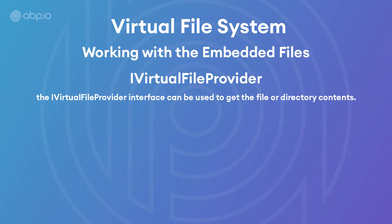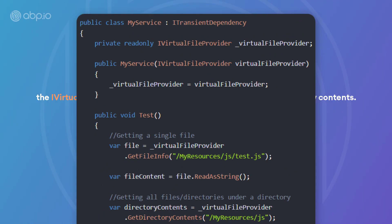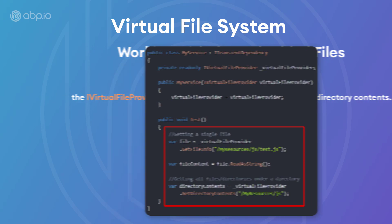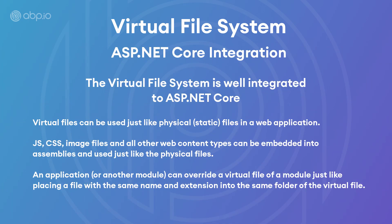After embedding a file into an assembly and registering that file to the virtual file system, the iVirtualFileProvider interface can be used to get the file or the directory contents. The virtual file system is well integrated to ASP.NET Core. Virtual files can be used just like physical files in a web application — JavaScript, CSS, image files and all other web content types can be embedded into assemblies and used just like physical files.